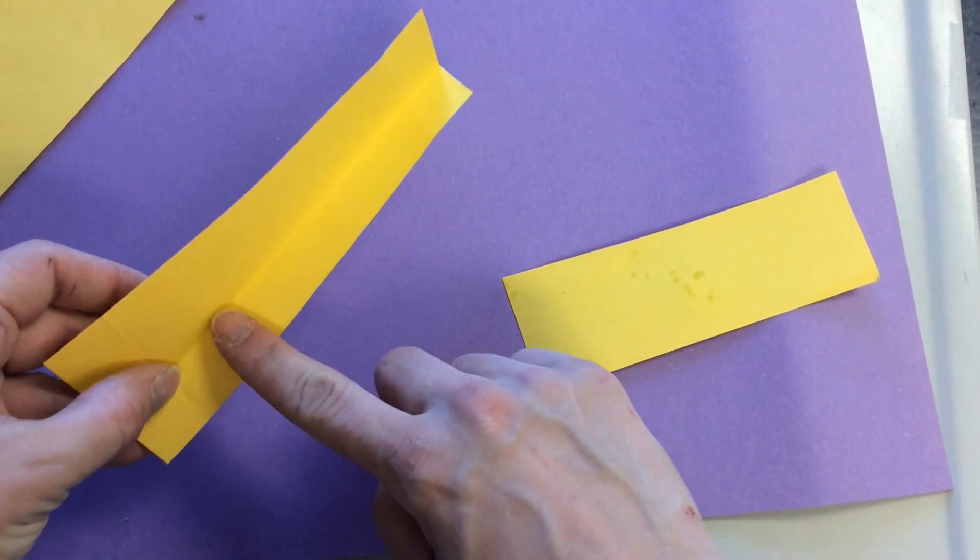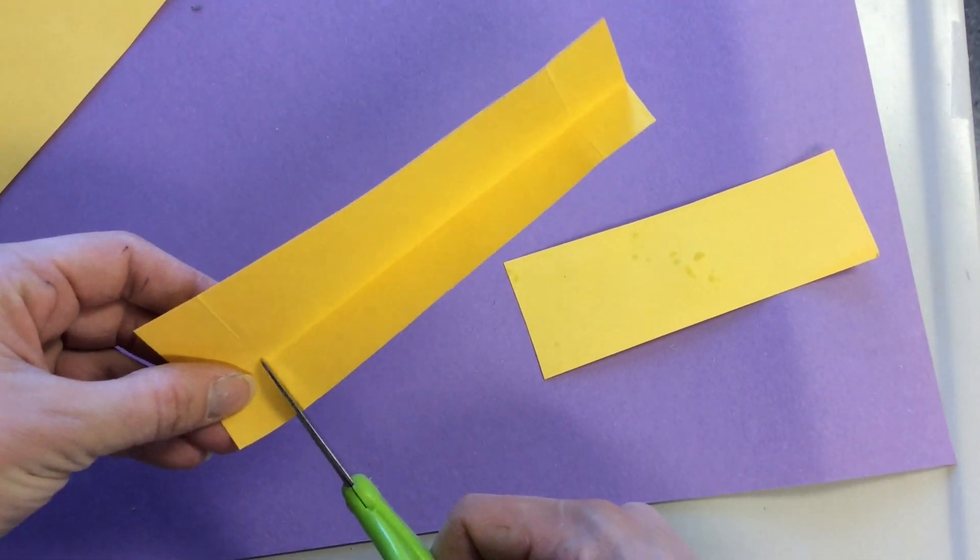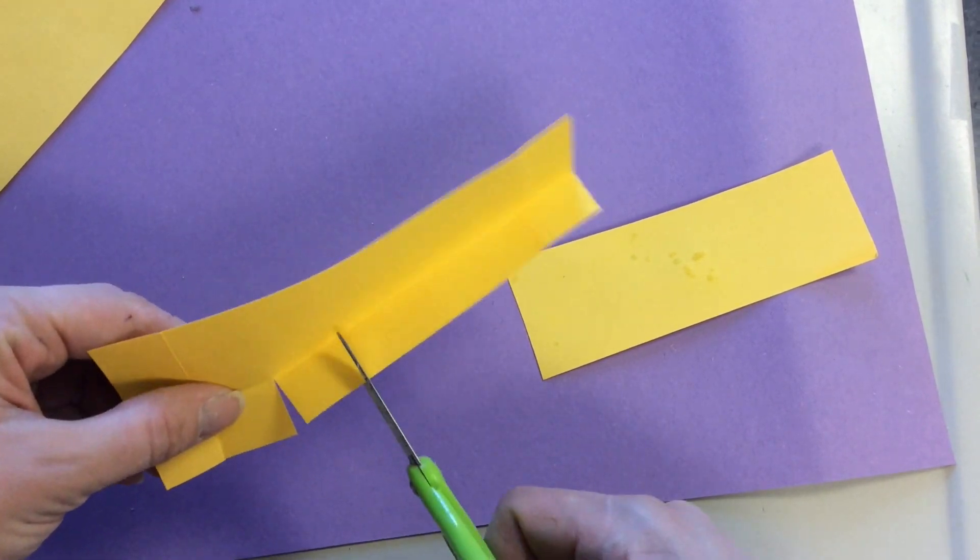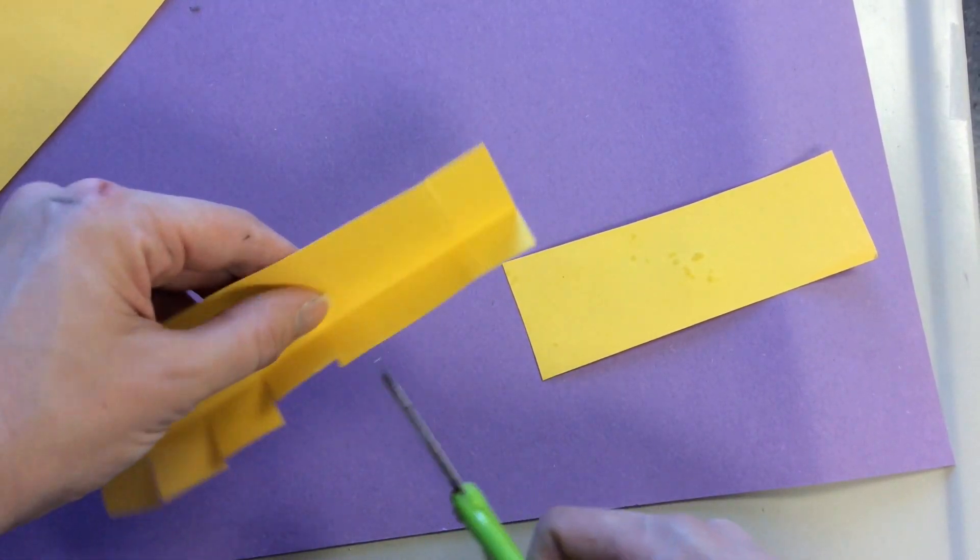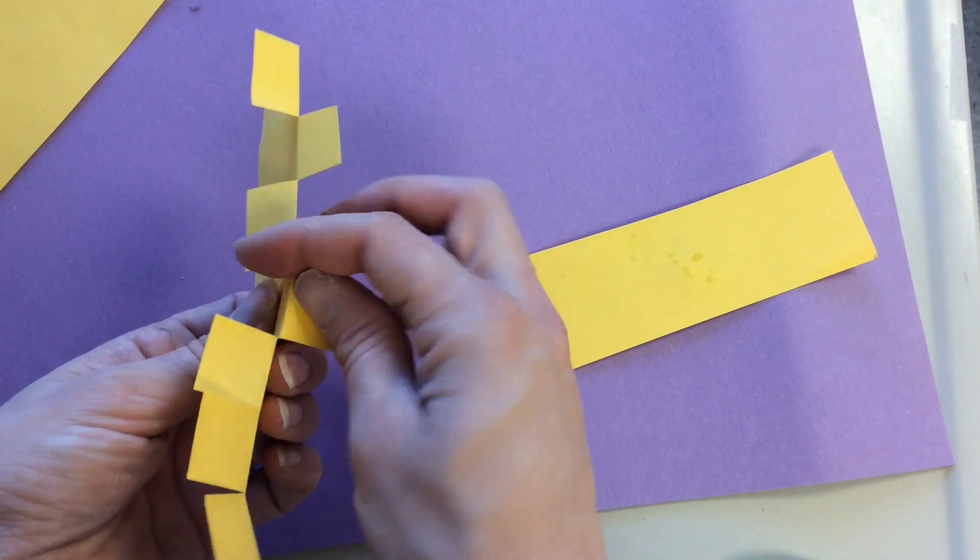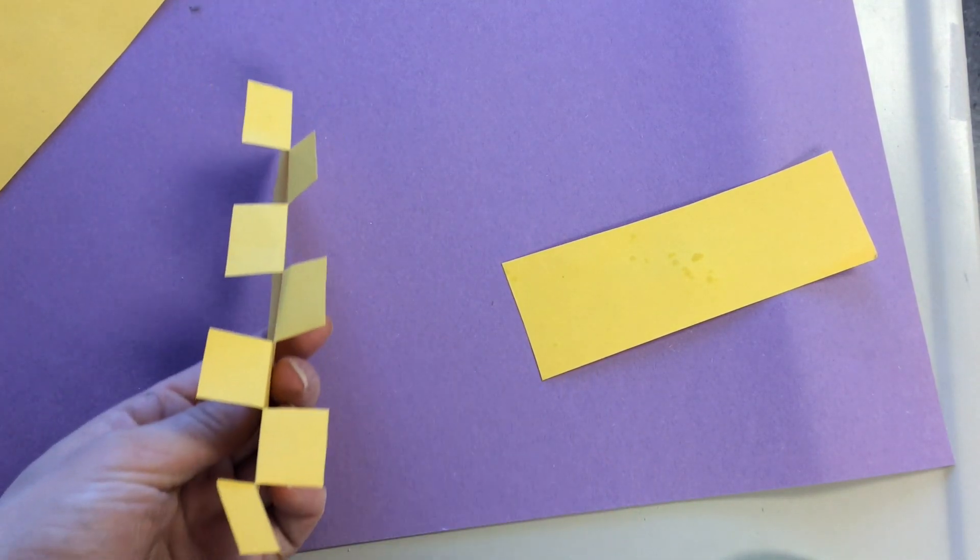I want my tabs to be about as wide as my finger, so I'm going to make a cut. Stopping when I meet the fold, my tabs should go every other direction. Like this.